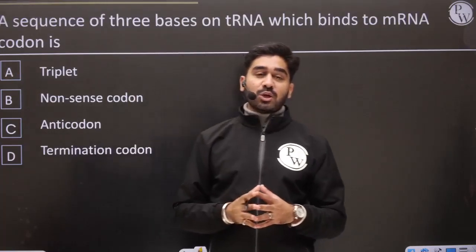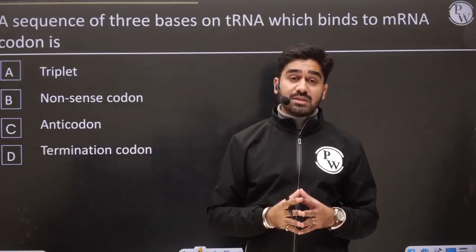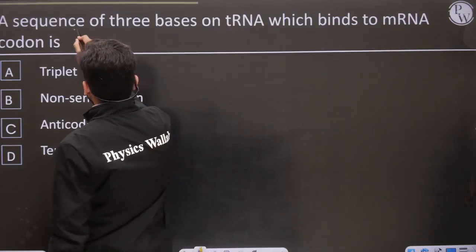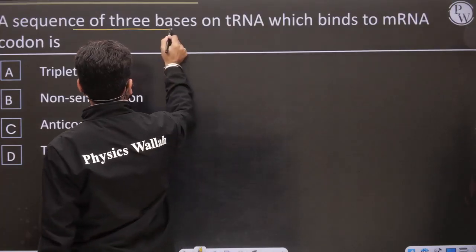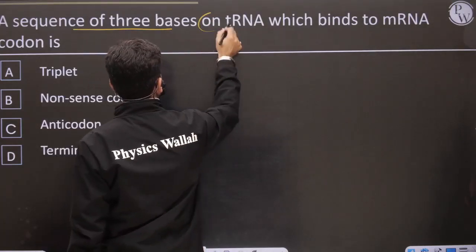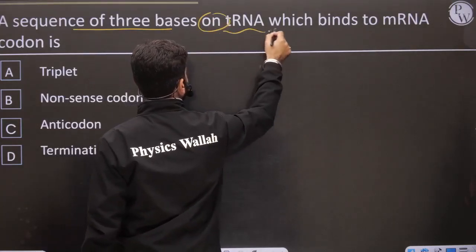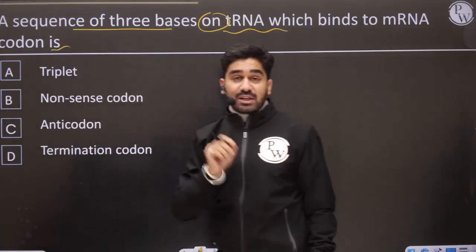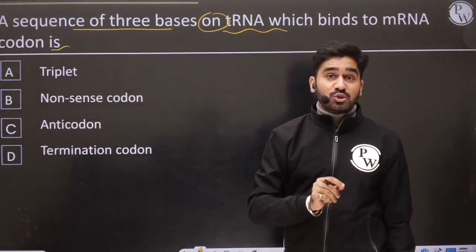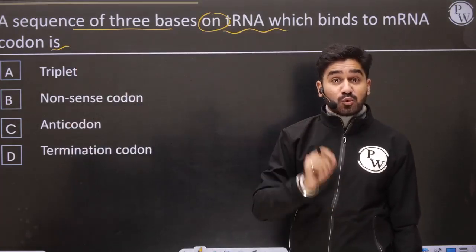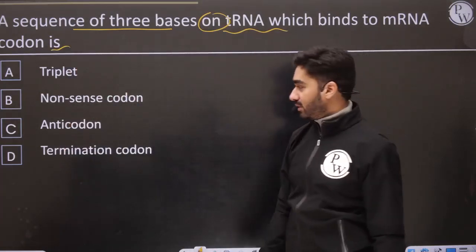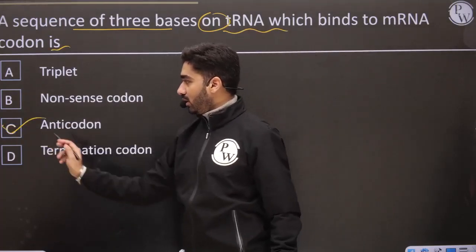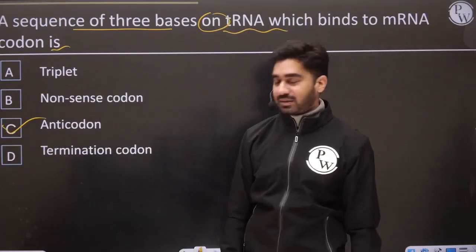Next: a sequence of three bases on tRNA. The sequence of three bases on tRNA — what do we call it? We call it the anti-codon.